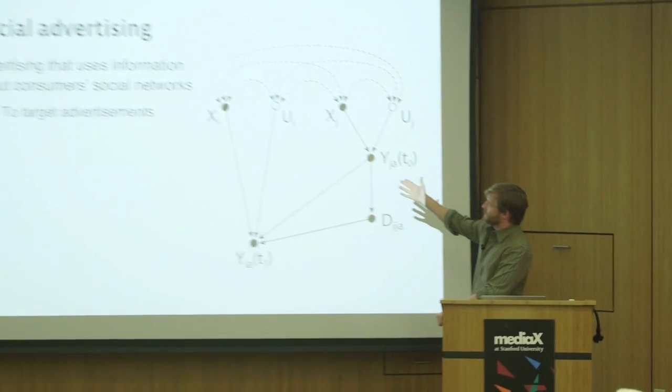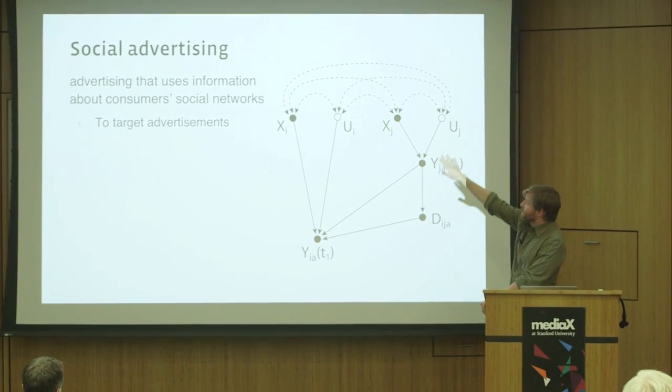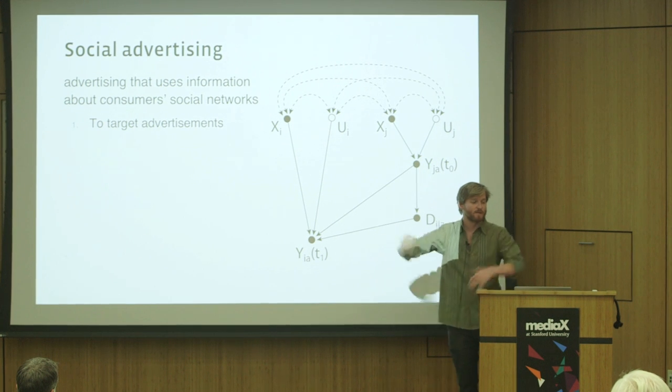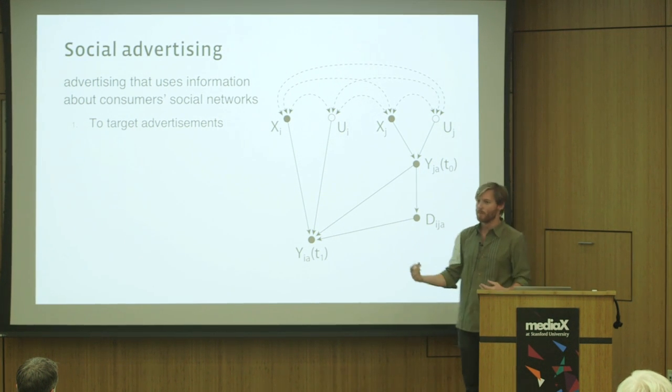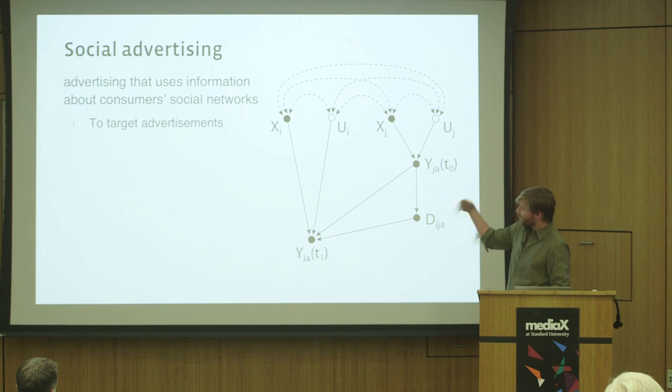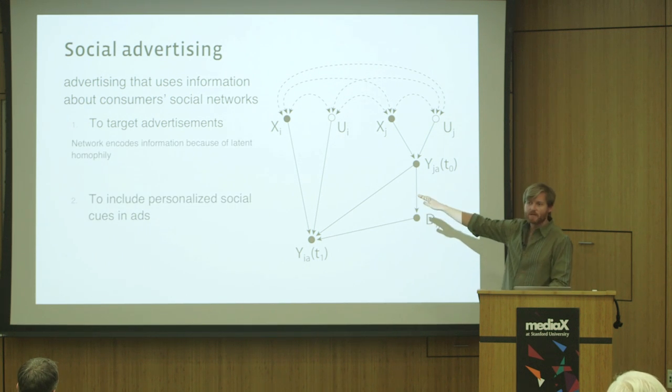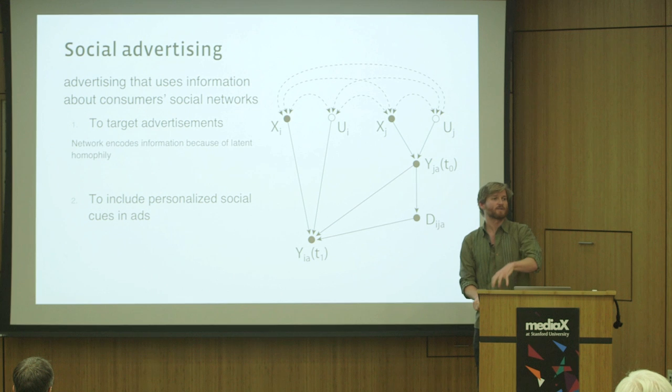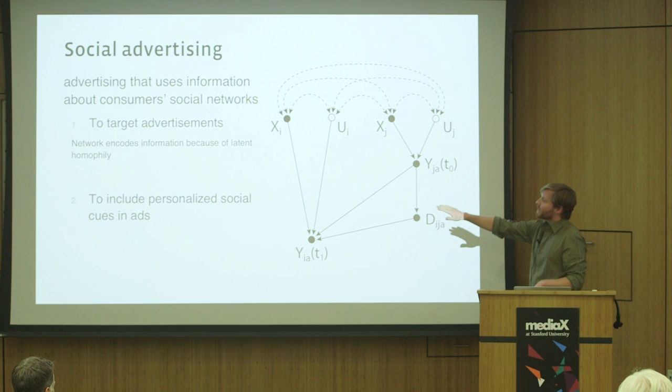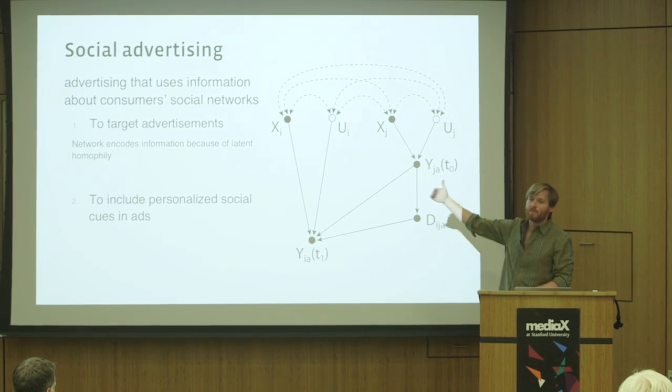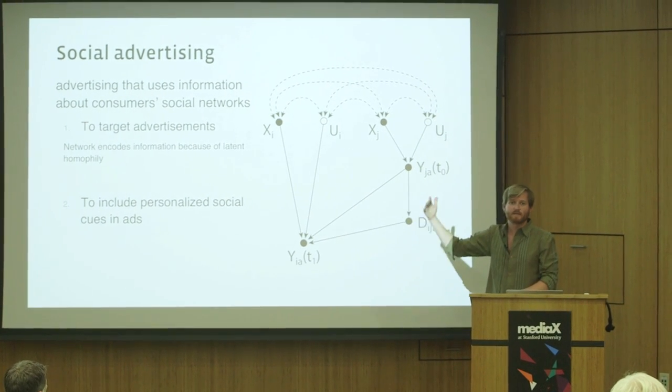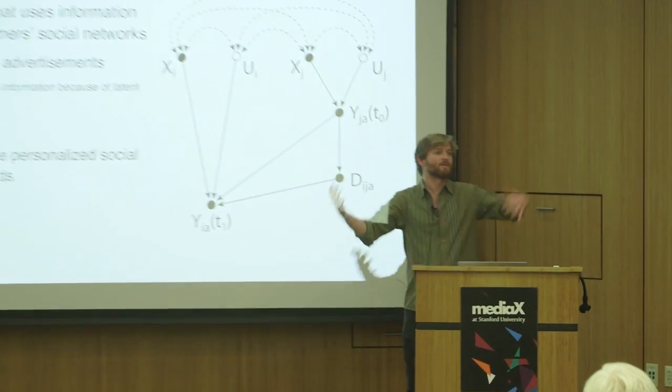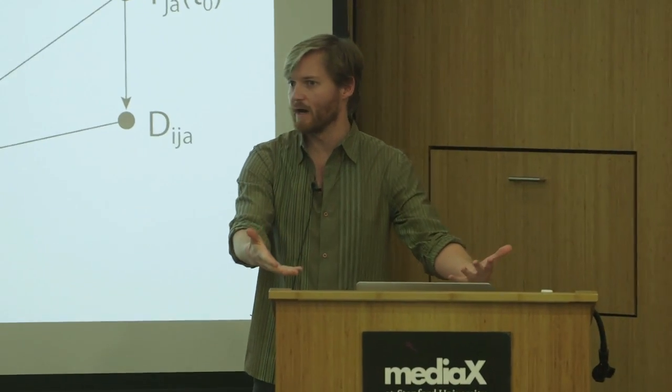A lot of times we try to do experiments to learn about this. One thing that Facebook has is social advertising, which is sort of a broader trend. Social advertising here we define is advertising that uses some information about consumer social networks for two purposes. One is to target advertisements, because the network encodes information because of this latent homophily. Because birds of a feather flock together, if your friend is interested in something, this says that you might also be interested in it because it reveals some of your otherwise unobserved traits. But also because social advertisements can include personalized social cues—that is, the ad can explicitly state that your friend has affiliated themselves with some brand or expressed an affiliation with a brand in a particular way, and that can be persuasive.